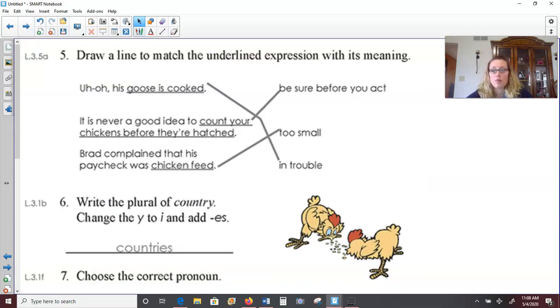And then move on to number five on the next page. Draw a line to match the underlined expression with its meaning. So we have be sure before you act. Too small or in trouble. His goose is cooked. Well, if you're saying your goose is cooked, that doesn't sound good. So that would mean that you are in trouble. Because a goose being cooked, that's bad news.